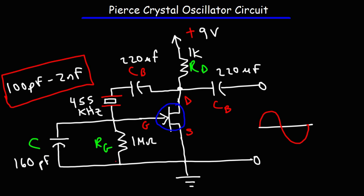When using a 160 picofarad capacitor, I got a frequency of 455 kilohertz — that's the Pierce crystal oscillator circuit. It's very simple to design, doesn't require many components, and works pretty well. For this value, the peak output voltage was measured to be around 3.8 volts.